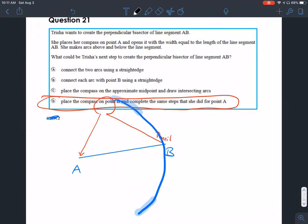So visually, we would be making an arc like this on the other side. And we would have this perpendicular bisector. It just asks for the next step. So that's what it is.